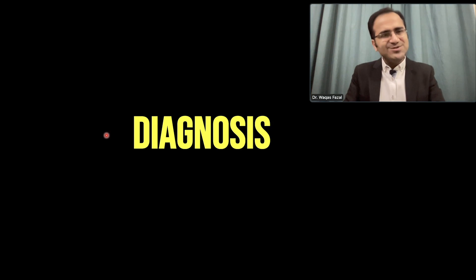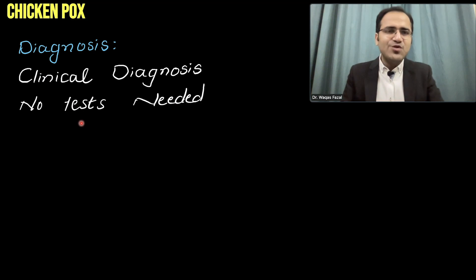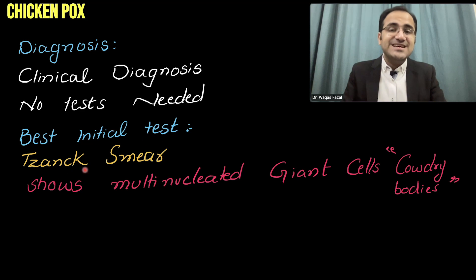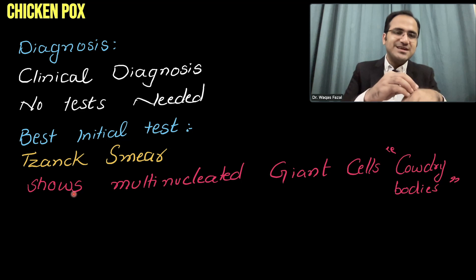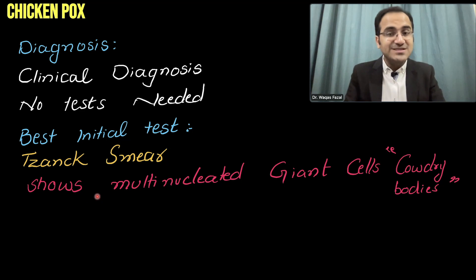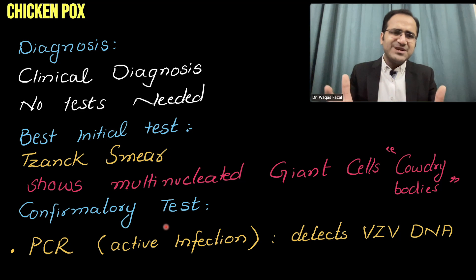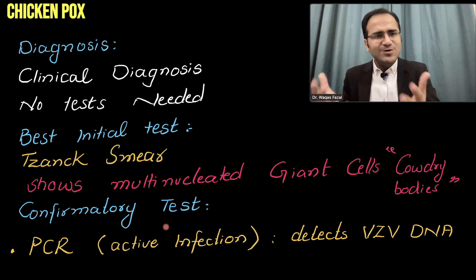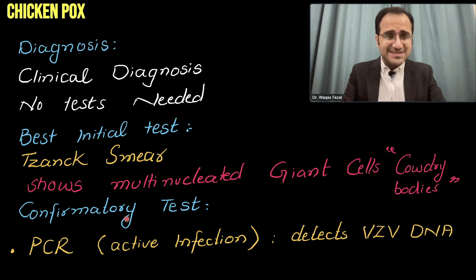Coming to the diagnosis of chickenpox. Diagnosis of chickenpox is very obvious — it is a clinical diagnosis and can be easily made by looking at the rash, especially in the vesicular phase. No tests are needed. But for academic purposes, the best initial test is the Tzanck smear, in which a sample is taken from the vesicles, stained, and examined under the microscope to see multinucleated giant cells and Cowdry bodies. The confirmatory test for active infection is PCR to detect VZV DNA.